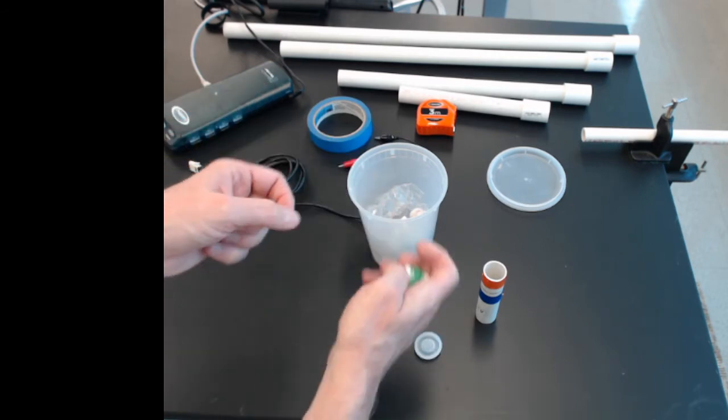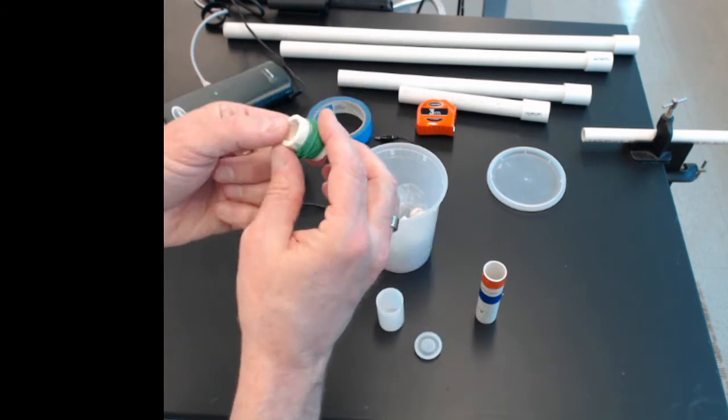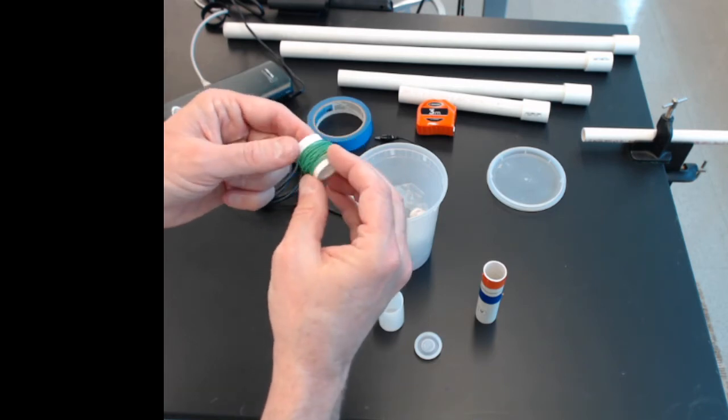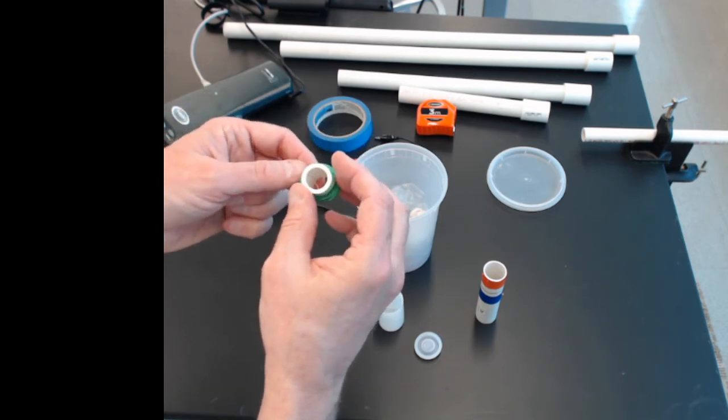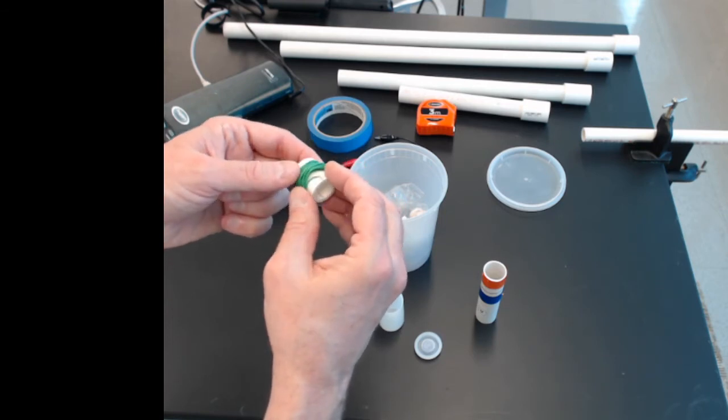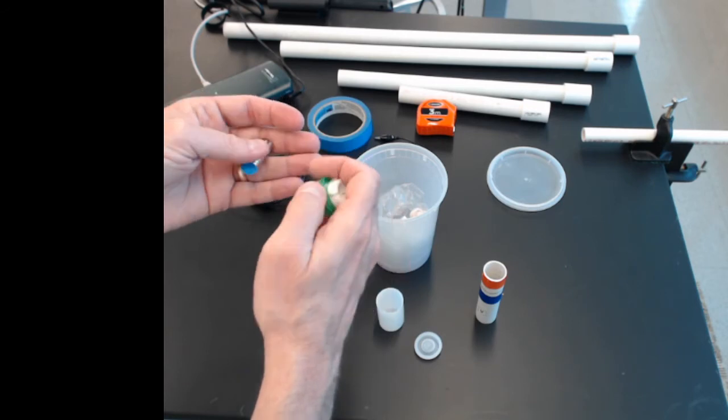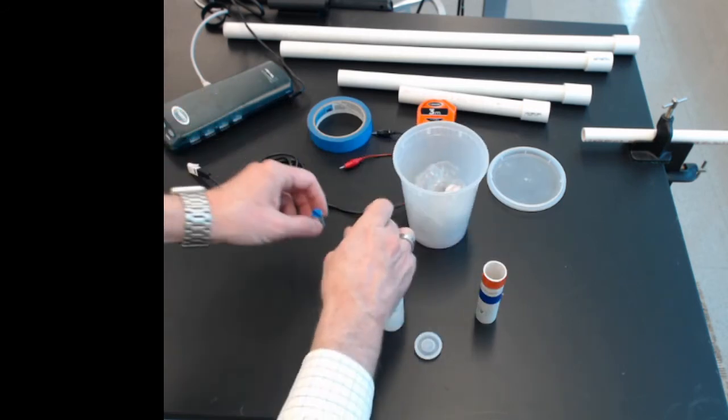Also in here is a little spool of wire. It's just wrapped on PVC pipe to hold it. The solid wire is about two meters long. The length doesn't matter. What we're going to do is count how many times we wrap the windings around the PVC pipe.